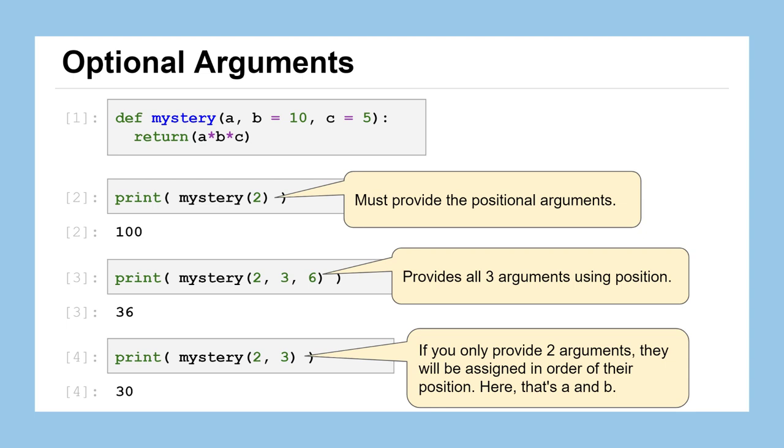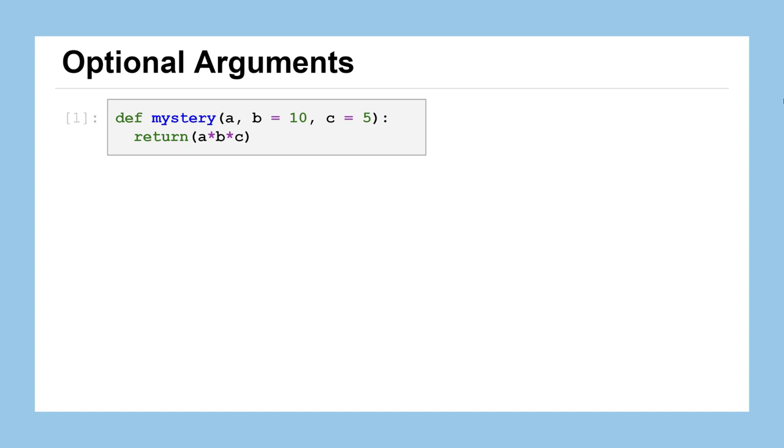But what if you wanted to provide an override for the parameter c, but make this function keep using the default value for b? It's going to get hard to specify just by listing out numbers because Python will assume no matter what that second number is, that it should go to the second parameter. So it turns out Python has a nice way to handle that kind of request. Here, we call the mystery function by passing an argument for a, that's the value 2. And because we want to leave the value of b alone, the default argument of 10, we can just specify that we want to overwrite the default value for c by mentioning it by name. So we would do 2, c equals, and then we pick the value to deviate from the default. So here we chose c equals 3. And we can see that we get the output of 60 because we're multiplying 2, the argument for a, the default value for b of 10, and then the overridden value of c, which was 3.